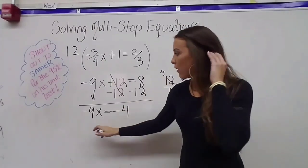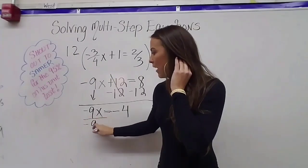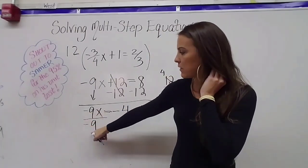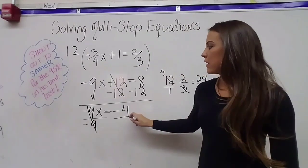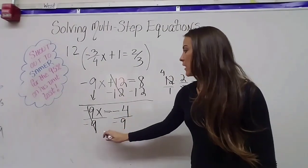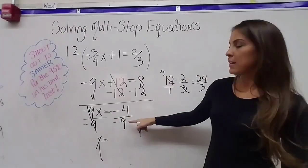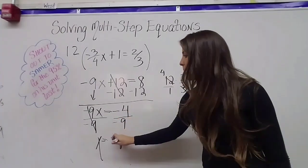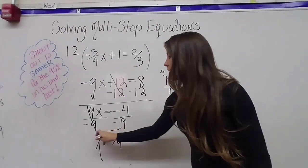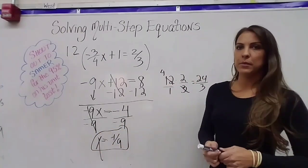One step left to getting x by itself, which is to divide by negative nine. It has to be negative because negative divided by negative will give me positive one. And I'll divide this side by negative nine. And I get x equals positive four-ninths because this is a negative divided by a negative, which is a positive. So I get x equals four-ninths as my solution.